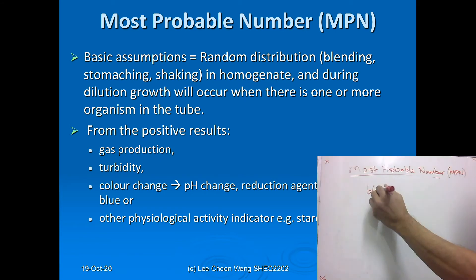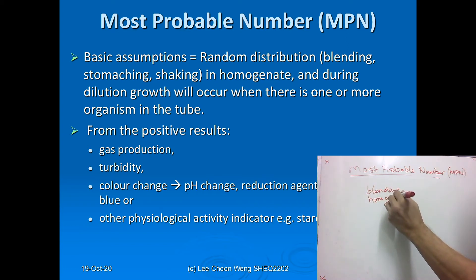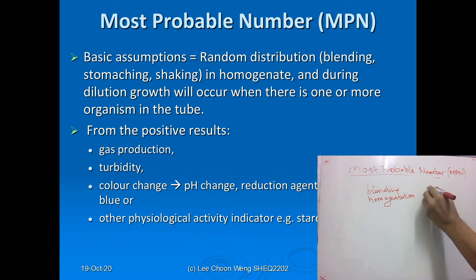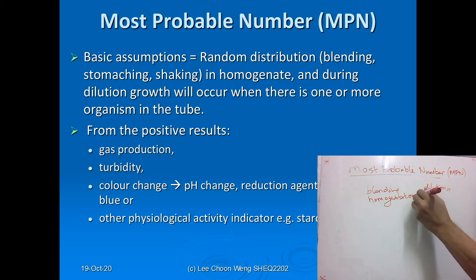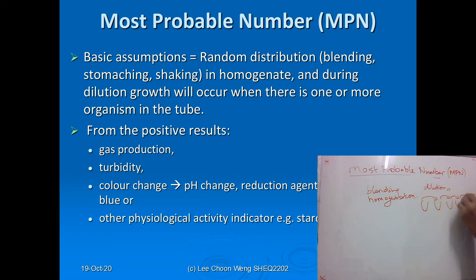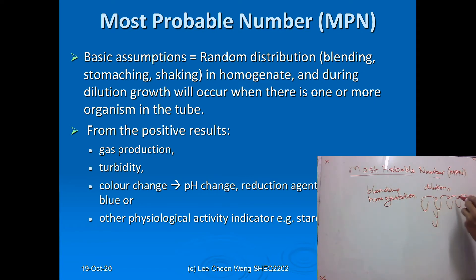Blending and homogenization are very important. If homogenization and dilution are not carried out properly, the results obtained when you inoculate into your MPN tubes will not be accurate.